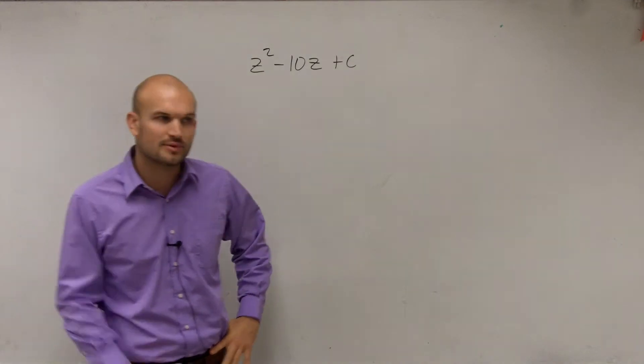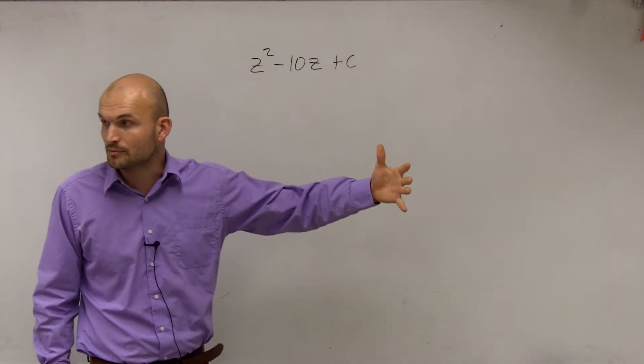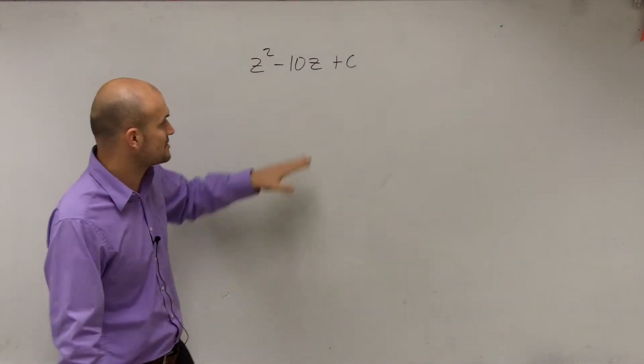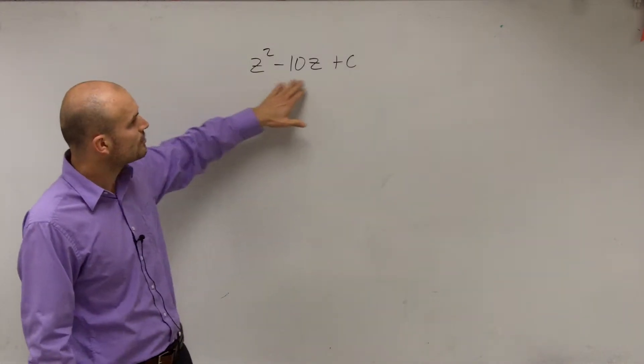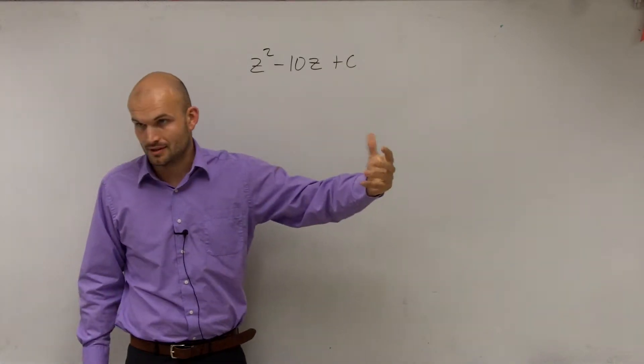This is all part of completing the square, but it's going to go back to our third step in our process of completing the square. This is going to be a process we're going to do. So what we want to do is right now we have a quadratic, and we want to make that quadratic a perfect square.